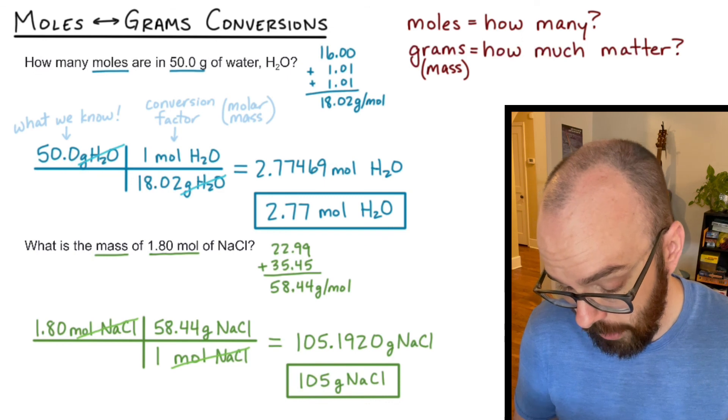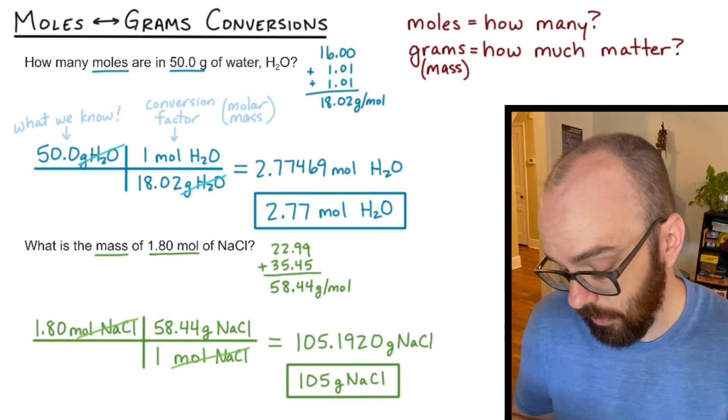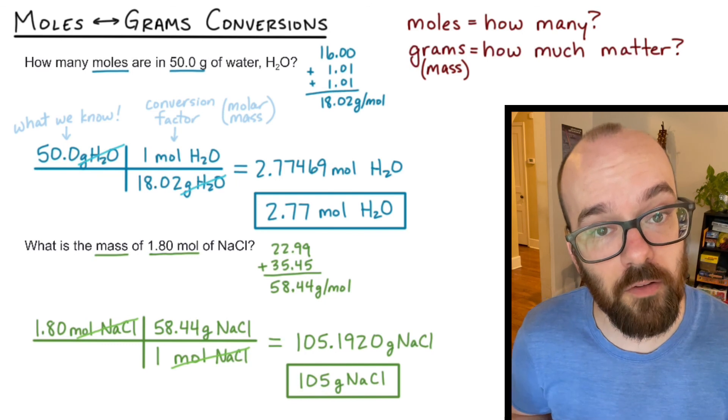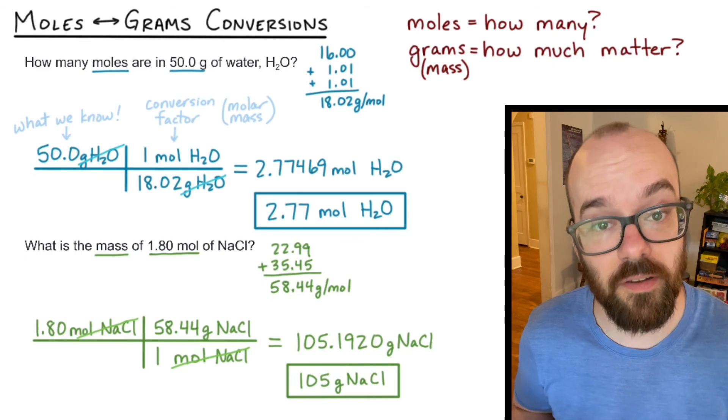So if in an experiment, I needed 1.80 moles of sodium chloride, I would measure out 105 grams. And then I would know that I have that number of moles of sodium chloride. So that's how we use molar mass to convert between moles and grams of a substance.